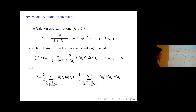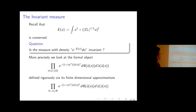The operator here is skew-symmetric, so you have the Hamiltonian structure, which means the Lebesgue measure defined using the Fourier variables is preserved. Recall that the energy is the H^{beta/2} norm, and as Nicolai explained, we may hope to build an invariant measure of this form. Written in Fourier variables it's clearer: it factorizes as a product of infinitely many Gaussian measures.